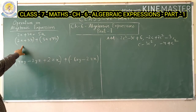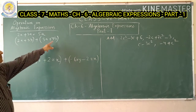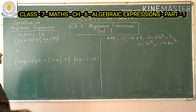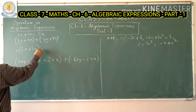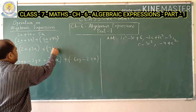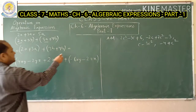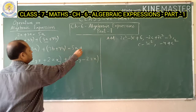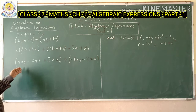Next example: (2a plus 3b) added with (3a plus 4b). Group the like terms — 2a and 3a are like terms, giving 5a; and 3b and 4b are like terms, giving 7b. So the result is 5a plus 7b.